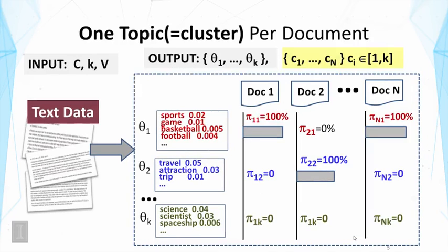If we change the problem definition slightly by assuming that each document can only be generated by precisely one topic, then we have a definition of the clustering problem. The output is changed so that we no longer have the detailed coverage distributions pi_ij's. Instead, we have cluster assignment decisions c_i, which is a decision for document i taking a value from 1 through K to indicate one of the K clusters, telling us which cluster document d_i belongs to.